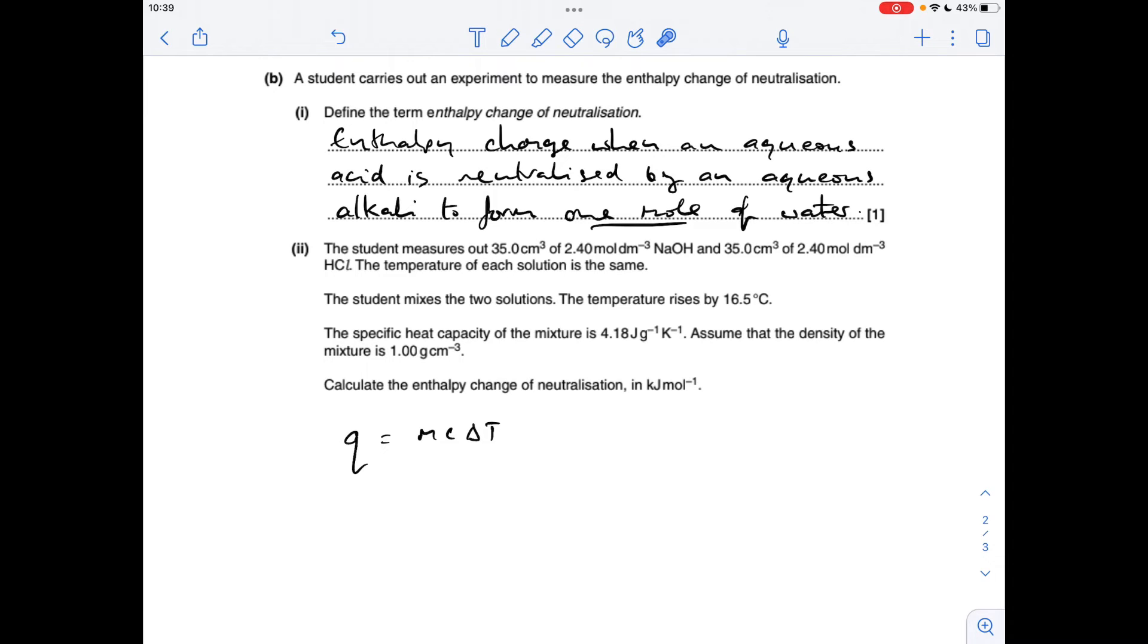And the delta T, we don't have to calculate it, we're told that it rises by 16.5 degrees C. So that gives us a value of 4827.9 joules. I would always tell my students to then immediately convert that to kilojoules, so they don't forget. Obviously divide by 1000, you get that.